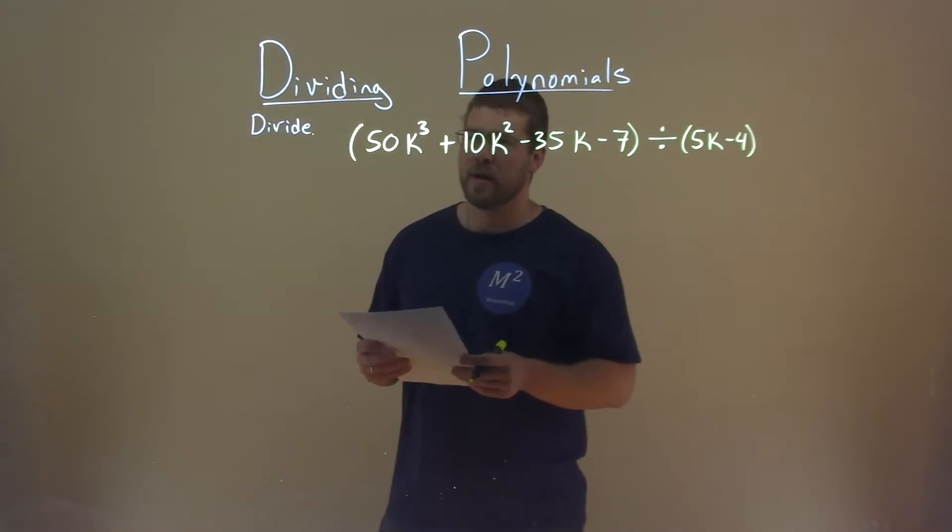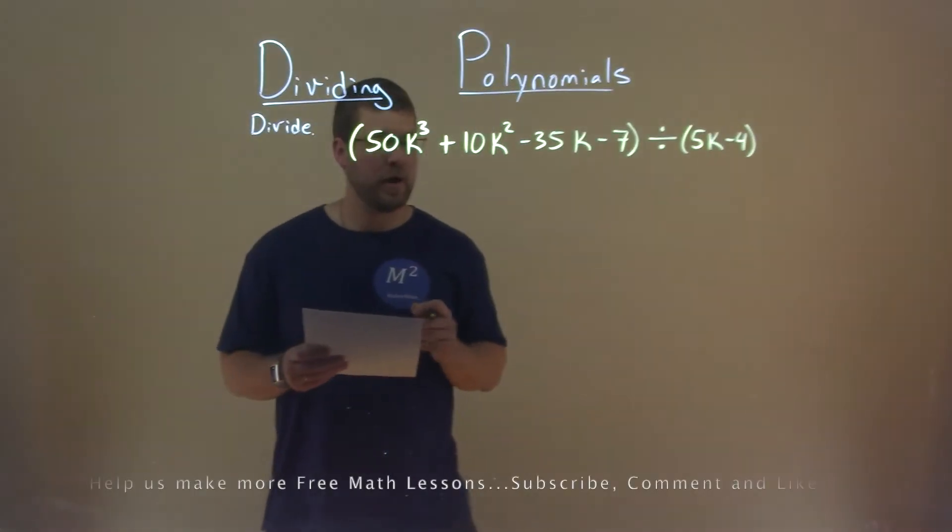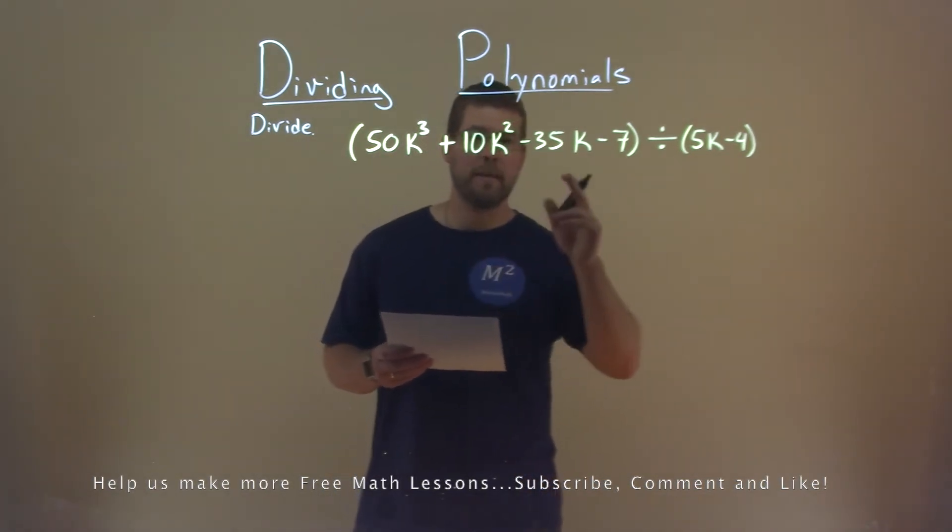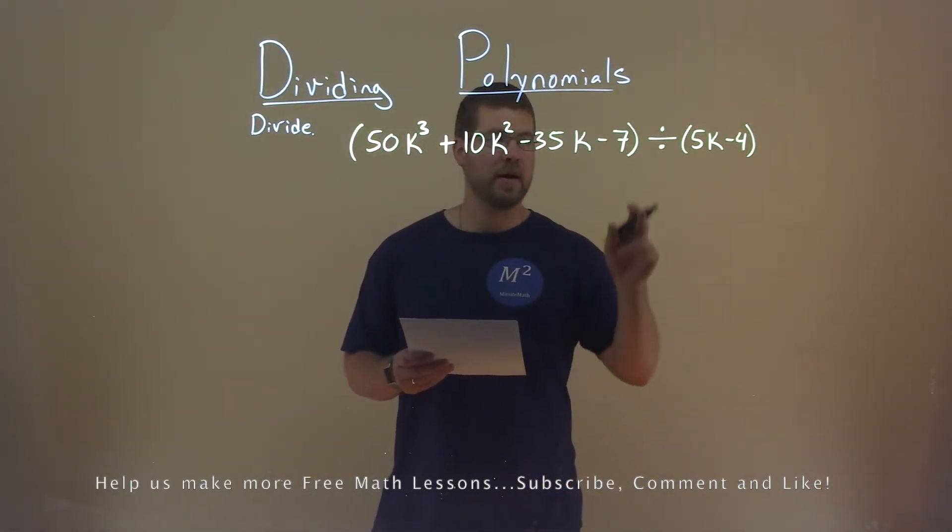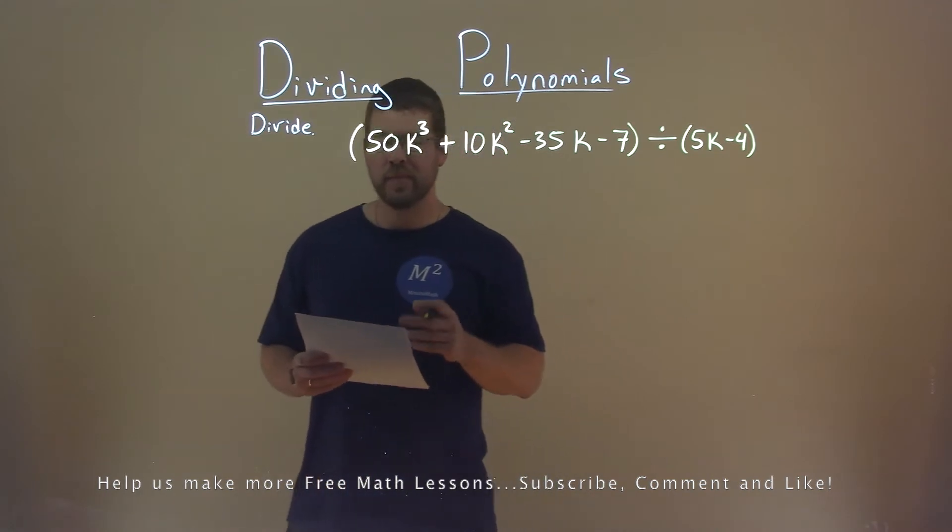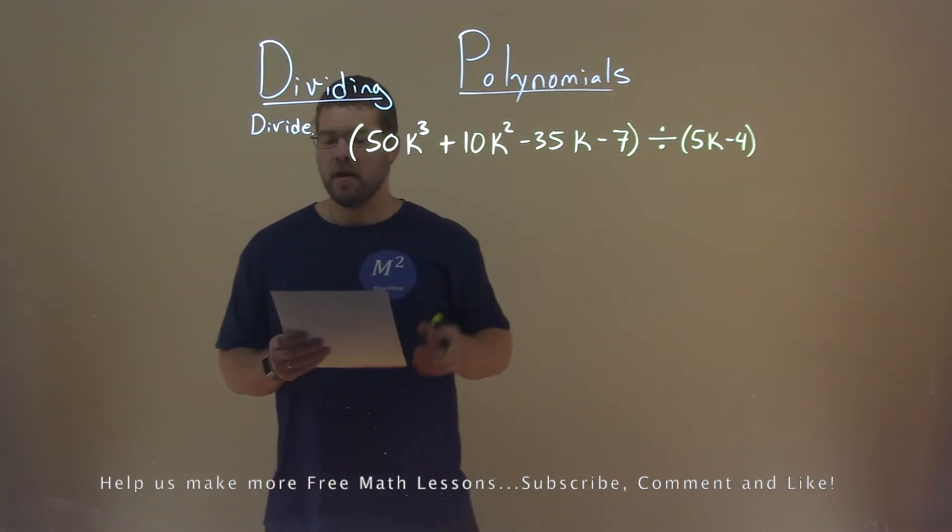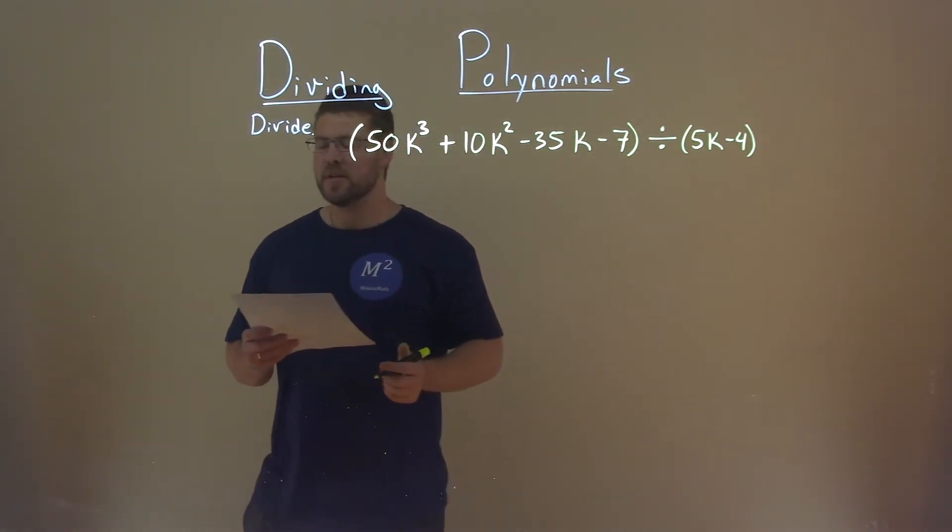We're given this problem right here. 50k to the third power plus 10k squared minus 35k minus 7 divided by 5k minus 4. And we need to divide this. So let's go do some long division here. Let's set it up.